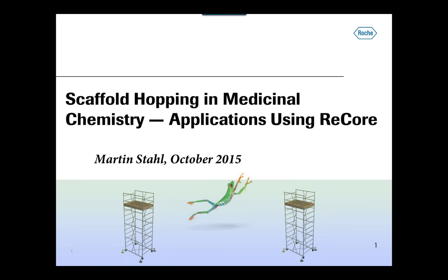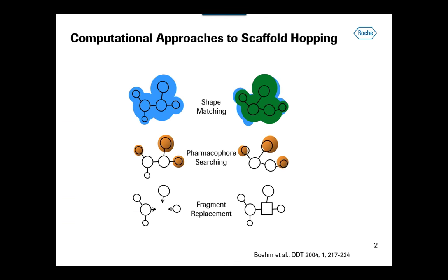So, scaffold hopping is the topic — scaffold hopping in medicinal chemistry — which is, of course, not about frogs jumping from one piece of scaffolding to another, but about replacing an essential part in a drug-like molecule with something else. The reason why we do that in medicinal chemistry: you're all aware of the need for IP and the need for dialing in or dialing out certain properties. So there are lots of reasons why we may want to change the core part of a molecule for something else. Medicinal chemists have done this for decades without any computational support, in a trial and error fashion.